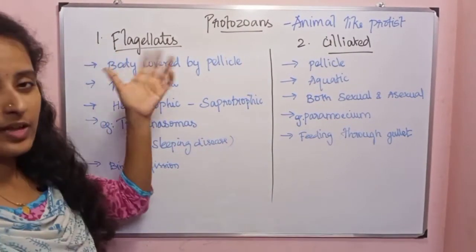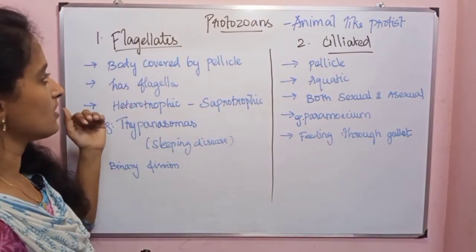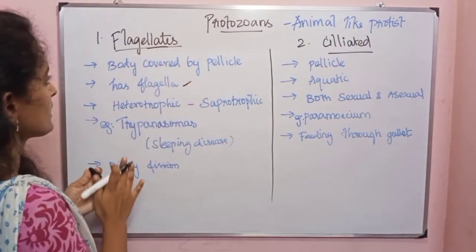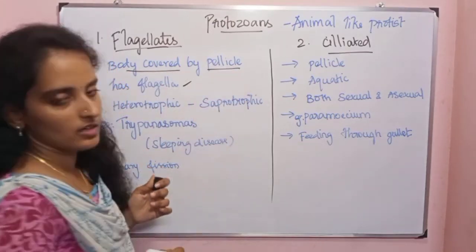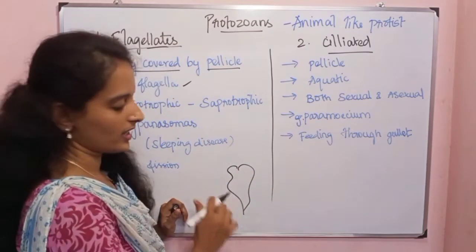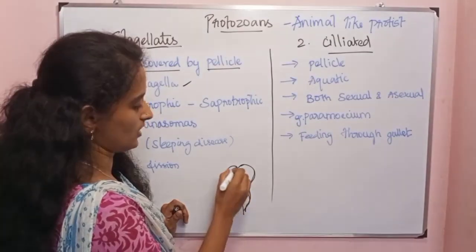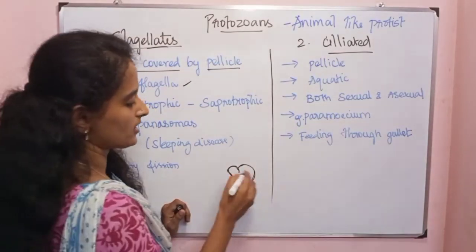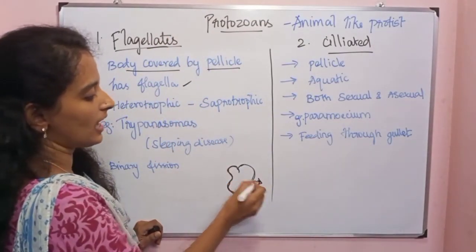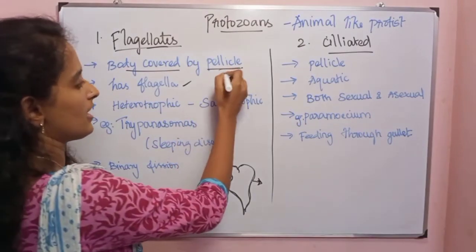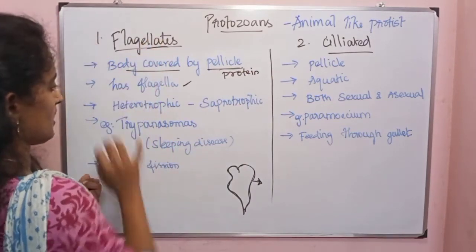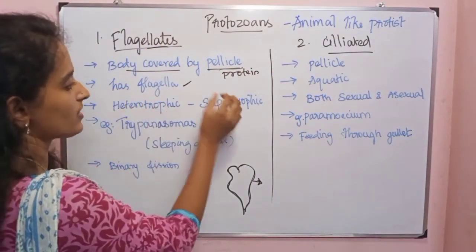The first type is flagellates. In flagellates, the locomotory organ is the flagellum. The body is covered by a pellicle, which is a protein-rich layer that covers the body of the flagellate protozoan.